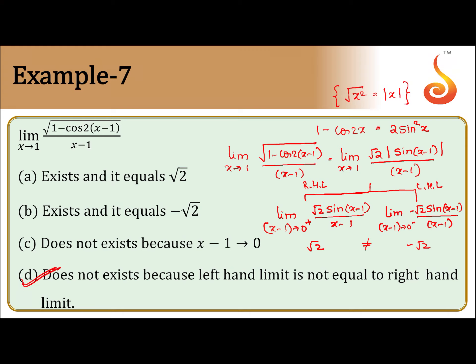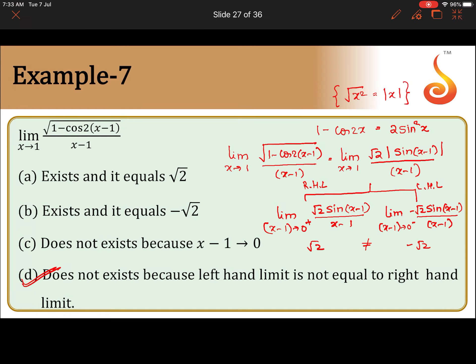Limit does not exist. The most important point is: under root of x square is mod x. What happens? When x is 0 plus it will give you root 2, when 0 minus it will give you minus root 2. Therefore limit does not exist. Limit will exist when left hand limit and right hand limit both must be equal.